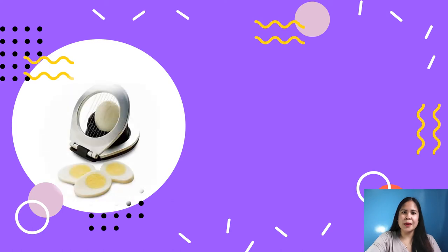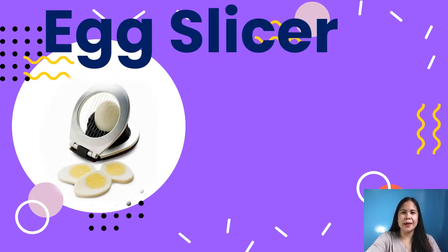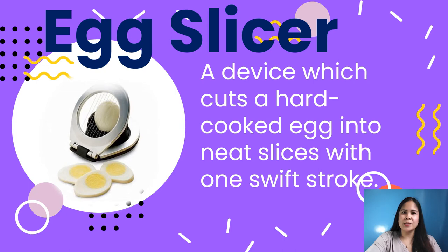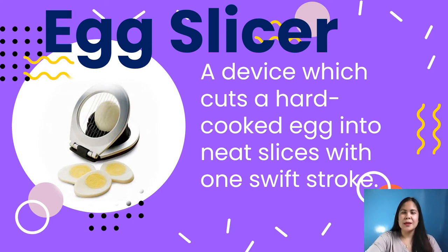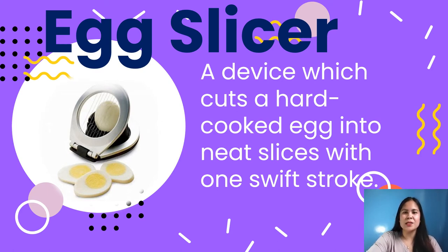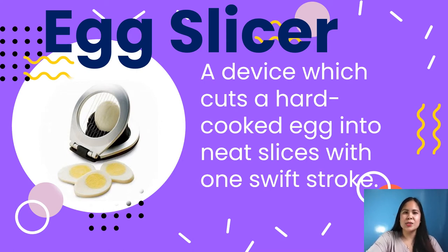Another tool is an egg slicer — a device which cuts a hard-cooked egg into neat slices with one swift stroke. An egg slicer is a food preparation utensil used to slice hard-boiled eggs quickly and evenly. It consists of a slotted dish for holding the egg and a hinged plate of wires or blades that can be closed to slice.